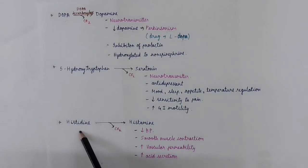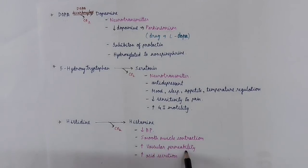Histidine is converted to histamine. Histamine reduces blood pressure and is involved in contraction of smooth muscle, increases vascular permeability, and also increases acid secretion.